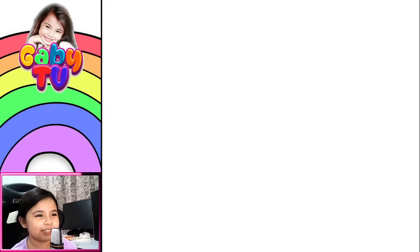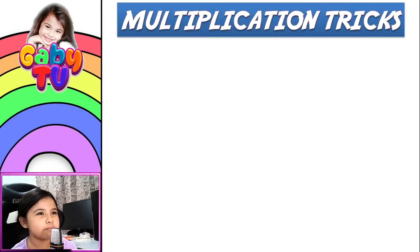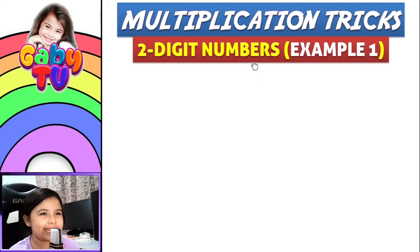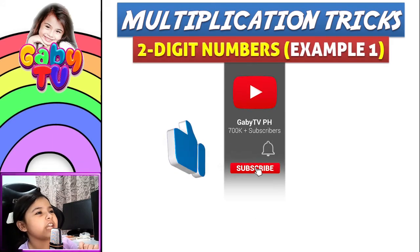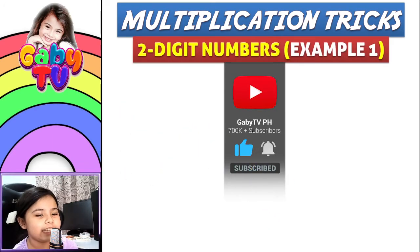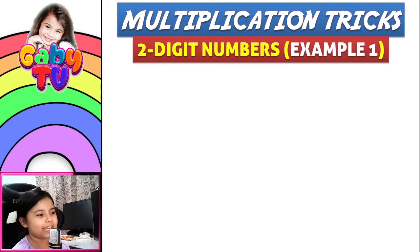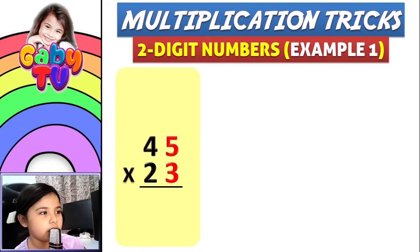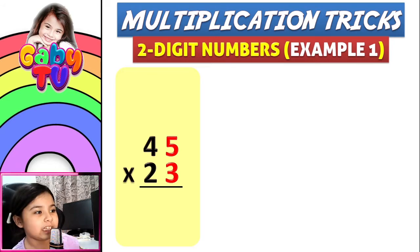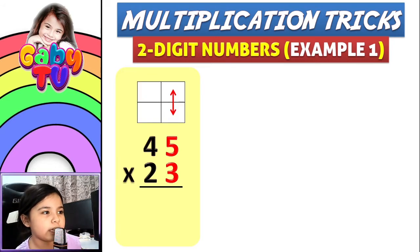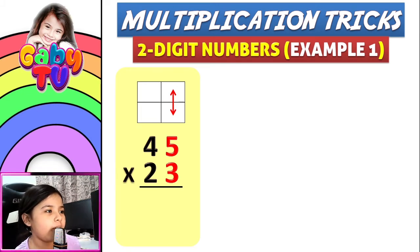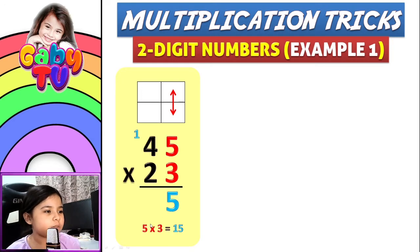This episode is all about multiplication tricks for two-digit numbers. Let's start with example number one: 45 times 23. We have to multiply the red numbers — five times three — so five times three equals 15. You put the five here and you put the one here on top.